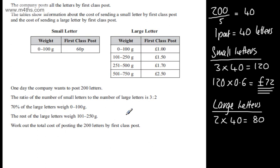Okay, 70% now of the large letters weigh between 0 and 100 grams. So if we consider 70% of 80, we can calculate this. 70% of 80 is going to be equal to... So if we think 10% is going to be 8, this is going to be 7 times that amount, which is 56. I'm going to do 56 multiplied by 1 pound and that's going to give me 56 pounds.